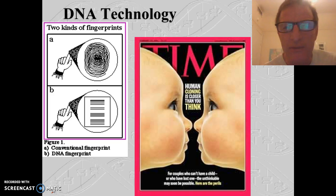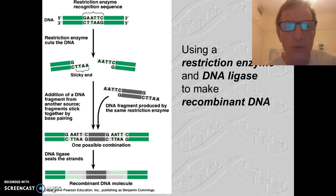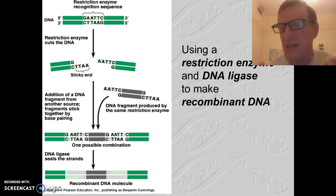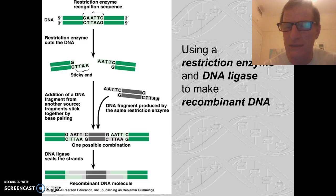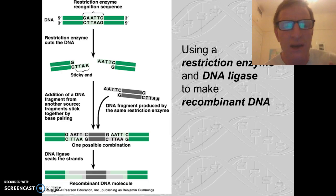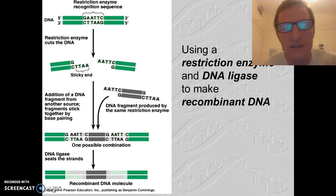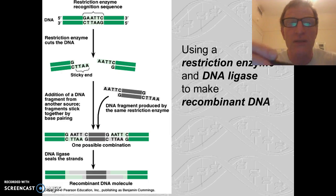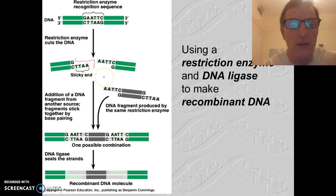We'll talk about cloning in a little bit, but first let's talk about how we splice genes together. If you want to splice two genes together from two different organisms, you have to have something to cut those genes — molecular scissors. Restriction enzymes are enzymes produced by bacteria that cut DNA. This restriction enzyme will recognize a specific sequence and cut right there.